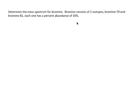We're going to look at determining the mass spec for a diatomic element, and we're going to look at bromine. The problem states that bromine consists of two isotopes, bromine-79 and bromine-81, each with a percent abundance of 50%. Bromine exists as Br₂.